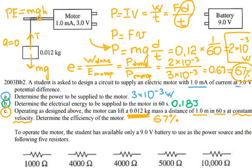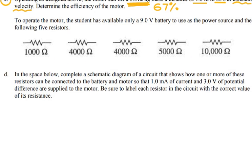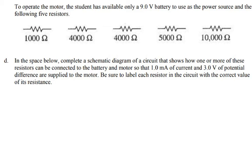And then for the next question, they say to operate the motor, the student has available only a 9-volt battery to use as the power source and the following five resistors. They ask in the space below, complete a schematic diagram of a circuit that shows how one or more of these resistors can be connected to the battery and motor so that 1 milliamp of current and 3 volt of potential difference are supplied to the motor. Be sure to label each resistor in the circuit with the correct value of its resistance.